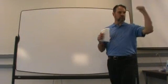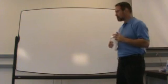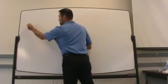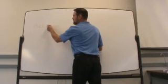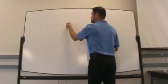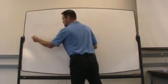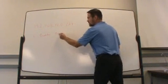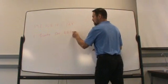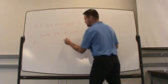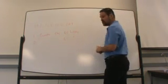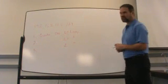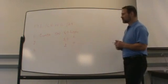So if we had an IP address of 192.168.10.0/24 and we had a requirement for 60 hosts, 20 hosts, and two hosts for a point-to-point connection, how would we proceed?